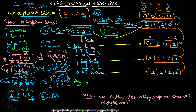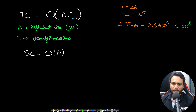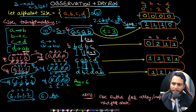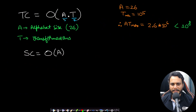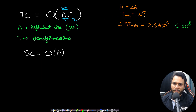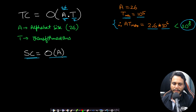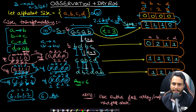We have seen why we use frequency instead of simulating string construction — the latter gives TLE and MLE. For time complexity, we go through each transformation iterating over the frequency map of alphabet size 26. With t up to 10^5, the total runtime is 2.6 × 10^6, well below 10^8. Space complexity is O(alphabet size), which is 26 in our problem.